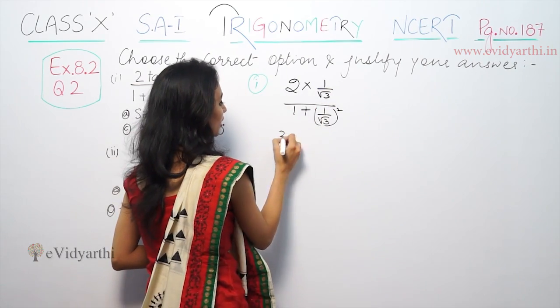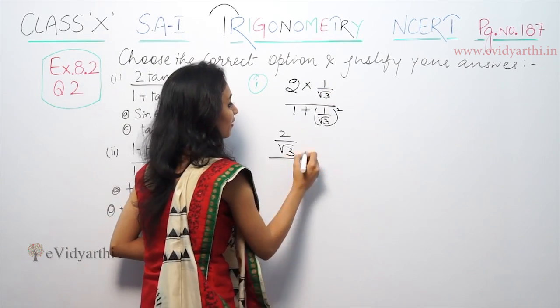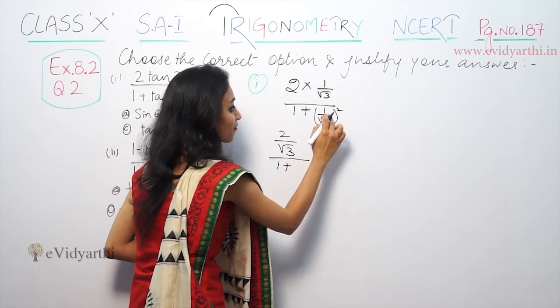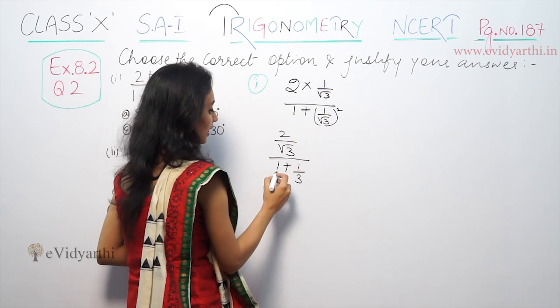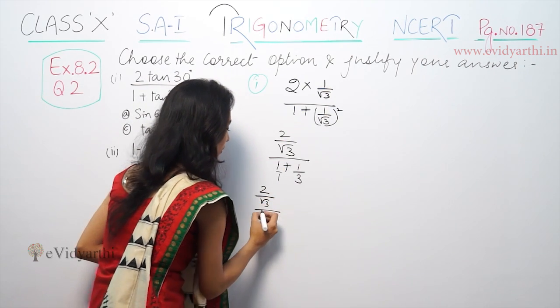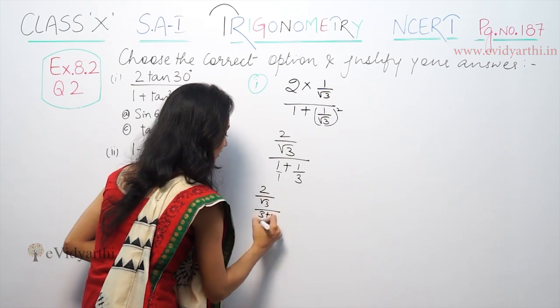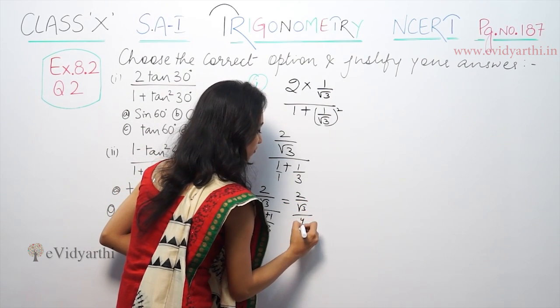So, 2 into 1 by root 3, which is 2 by root 3, upon 1 plus 1 by root 3 squared means 1 by 3. So 2 by root 3 upon 4 by 3.